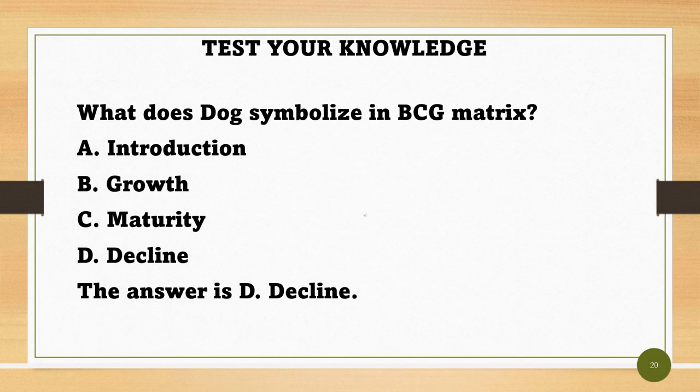What does Dog symbolize in the BCG matrix? A. Introduction. B. Growth. C. Maturity. D. Decline. The answer is D — Decline.